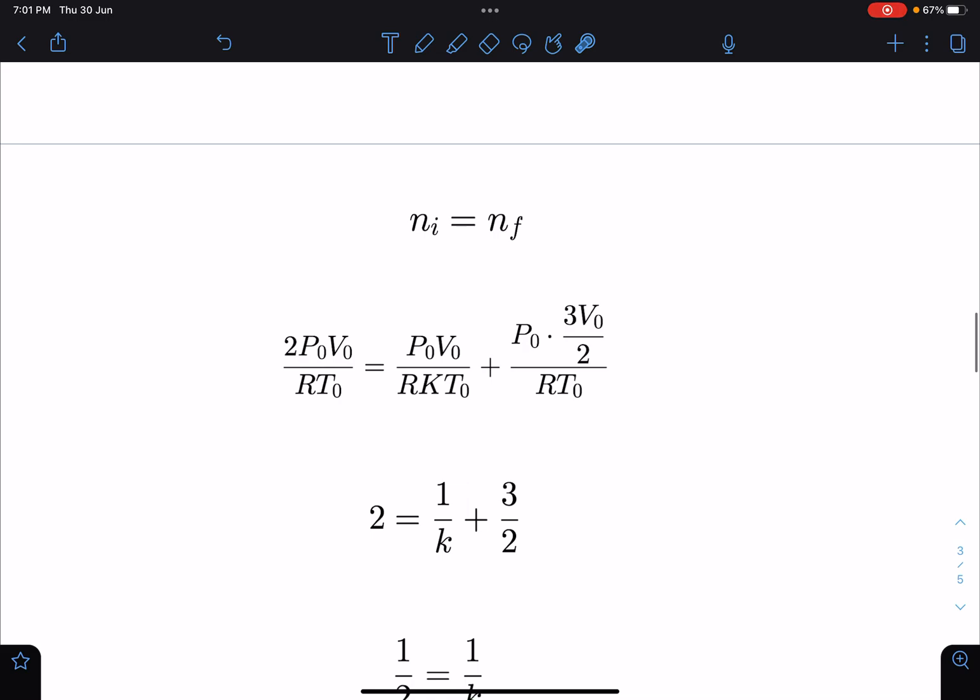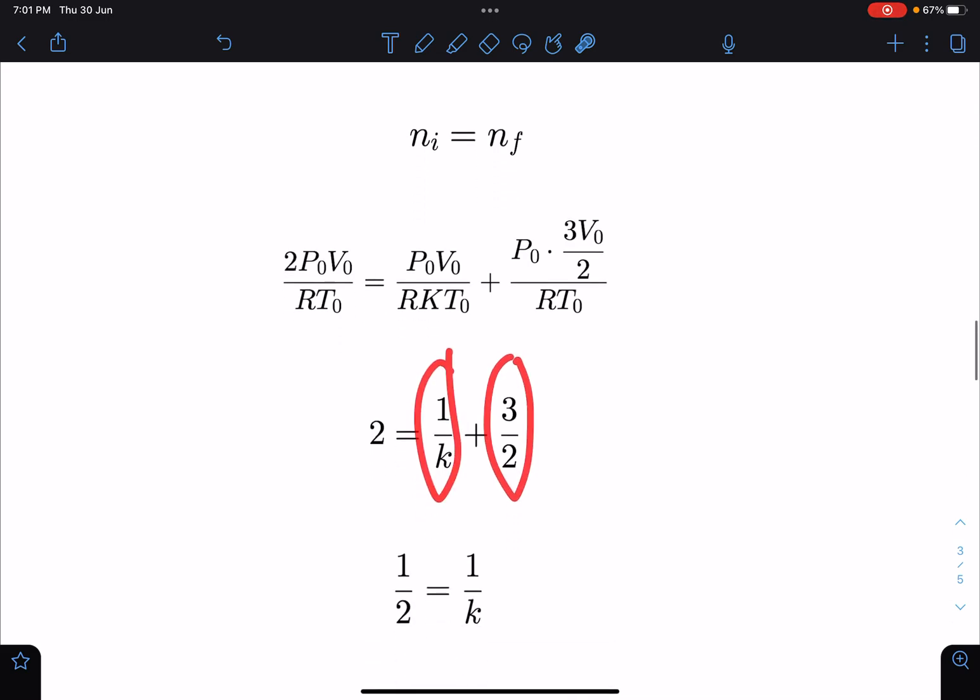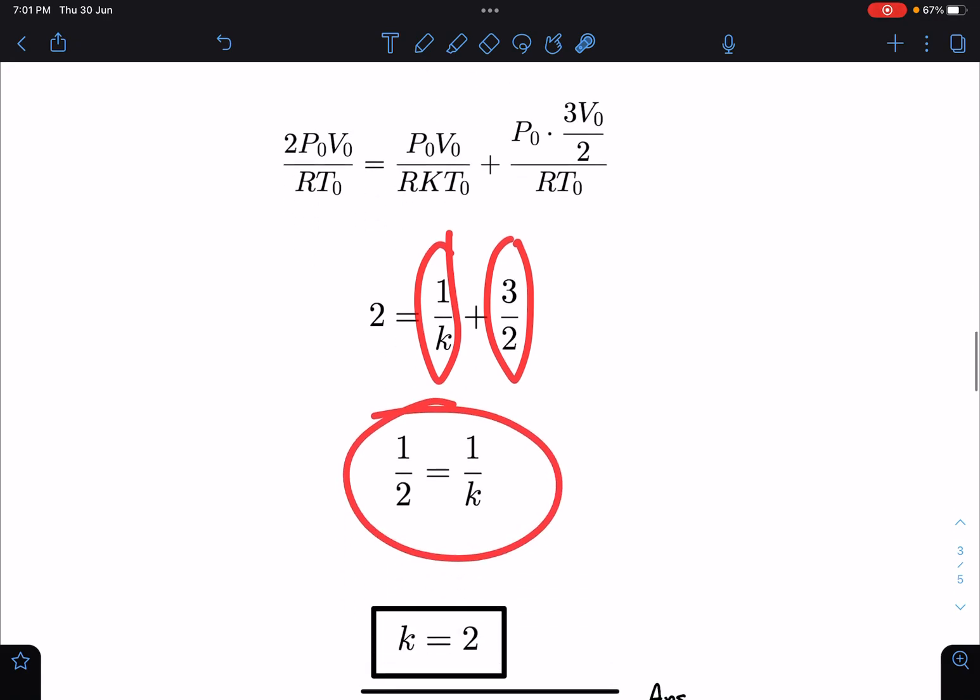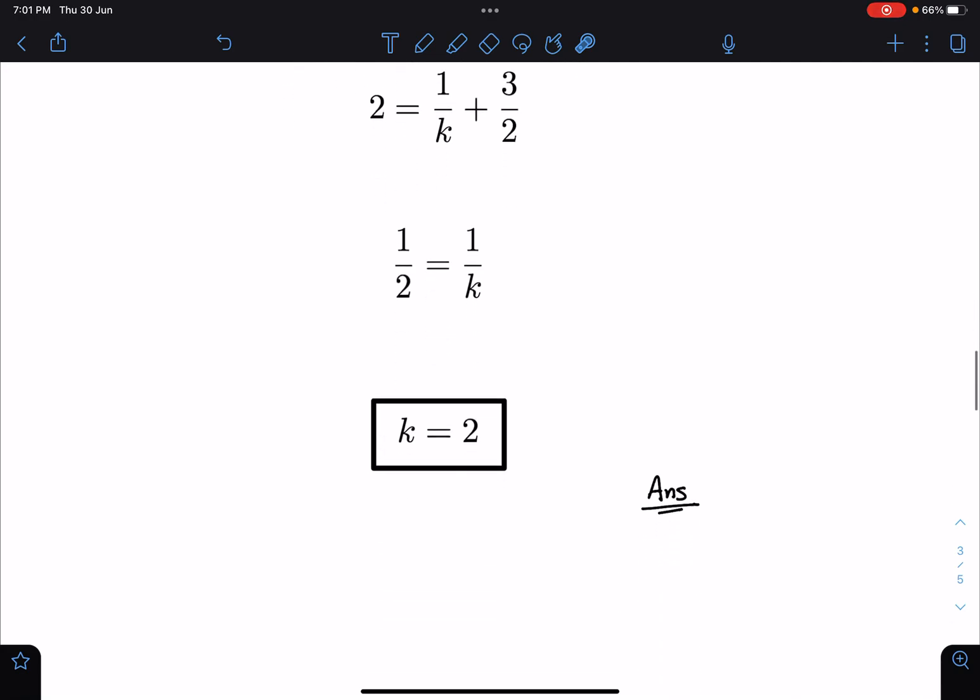When I simplify this, I am getting 2 is equal to 1 by K plus 3 by 2, or 1 by K is equal to 1 by 2, or K comes out to be 2. So basically we have to increase the temperature of the left chamber by 2 times, or 2 is going to be the answer for this problem.